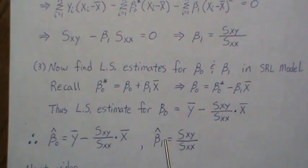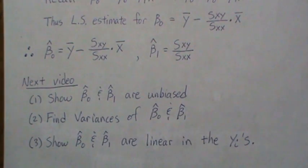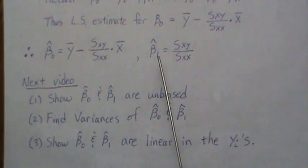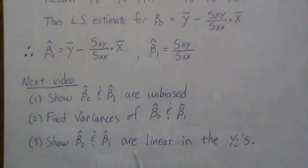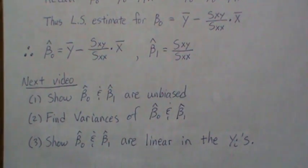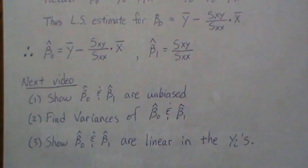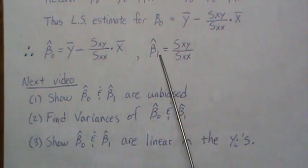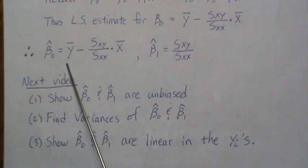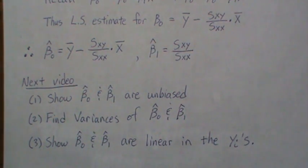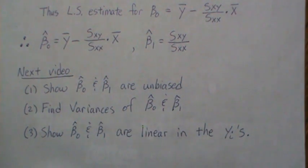That gives us our least squares estimates: the intercept beta-0-hat and slope beta-1-hat. The video is running a little long, so I'll stop here. In the next video we'll study the properties of these estimates — showing they're unbiased, finding their variances, and showing they're linear in the y's. With the normal theory assumption, the y's are normally distributed, so the estimates become linear combinations of independent normal random variables and are thus themselves normal. Thanks, and please like and subscribe!